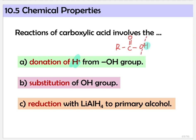Hydrogen will come out and be replaced by something from a reagent. The second type is substitution of OH group — the OH group will come out and be substituted by the reagent. And finally, reduction. For carboxylic acid, the reducing agent we can use is only lithium aluminium hydride, where the carboxylic acid will be reduced to primary alcohol.